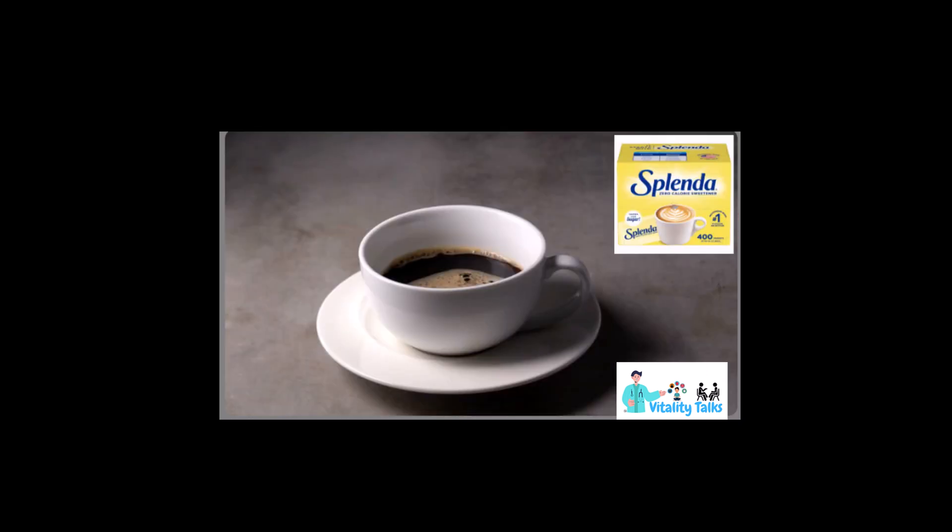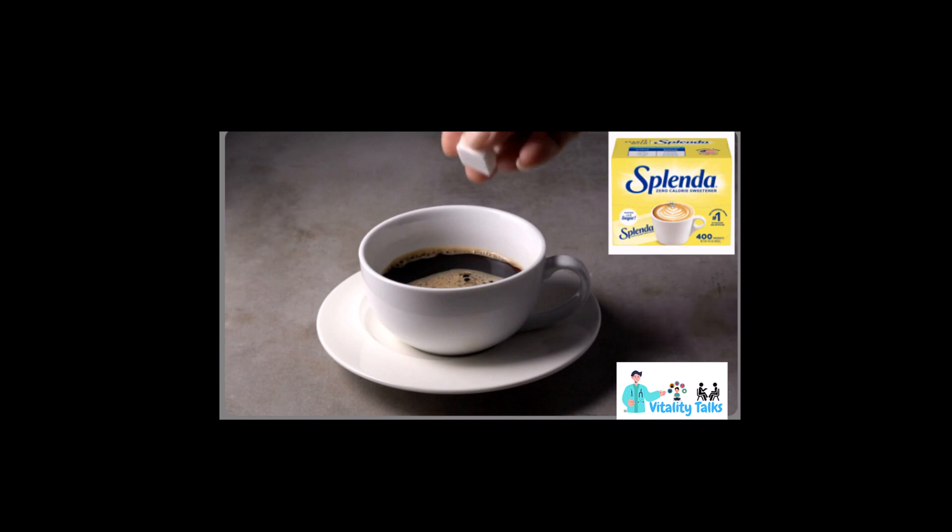Finally, Splenda is a brand of artificial sweetener that is marketed as a no-calorie, low-carbohydrate alternative to sugar. The active ingredient in Splenda is sucralose, which is made by chemically modifying sugar. Splenda is heat-stable and has a taste similar to sugar, making it a great substitute for many recipes.